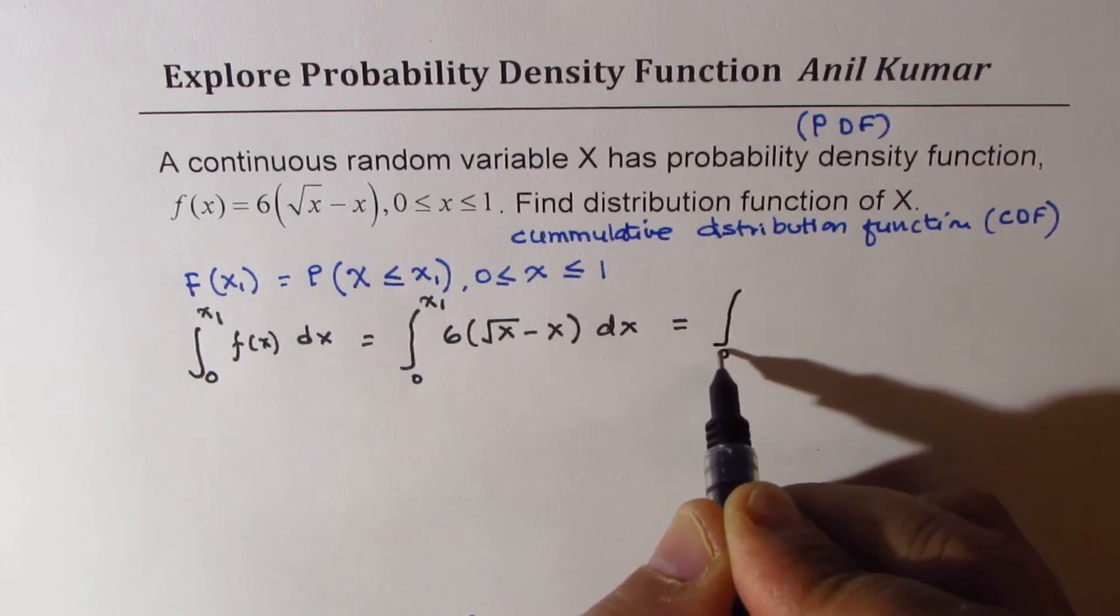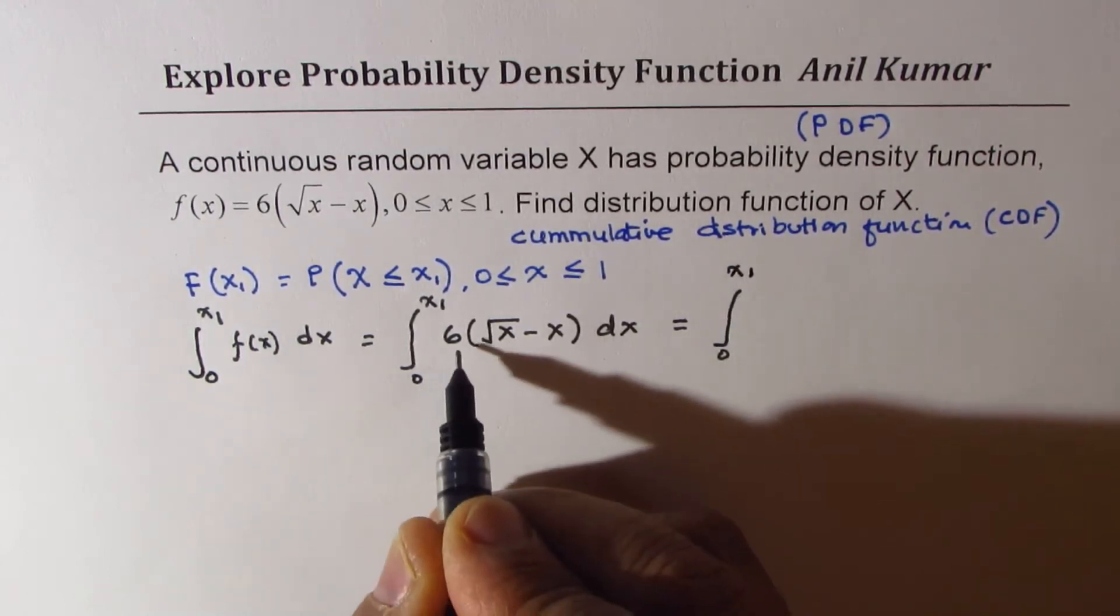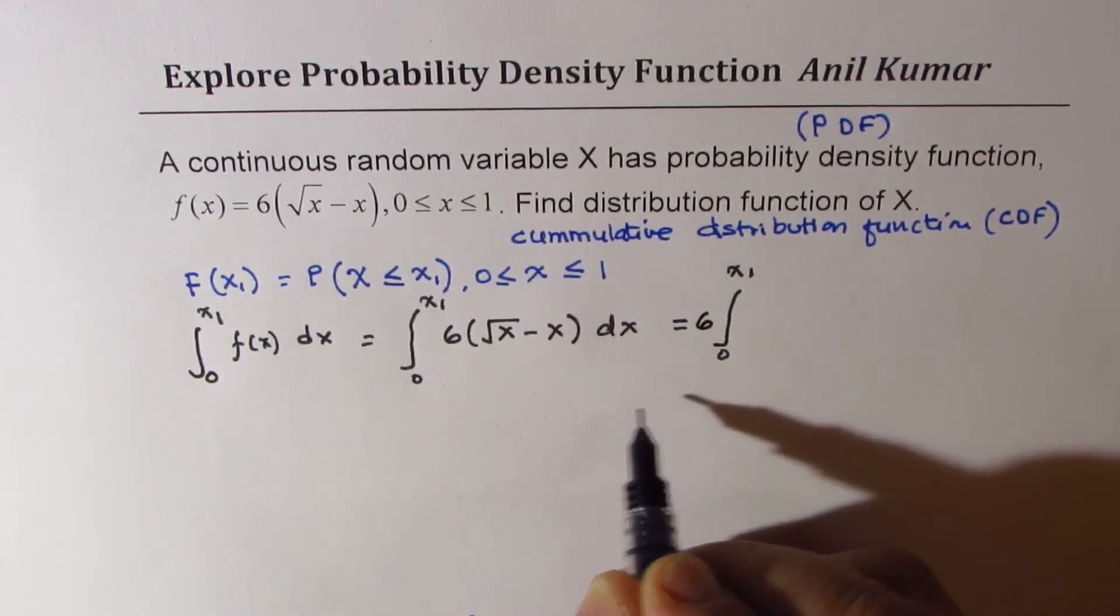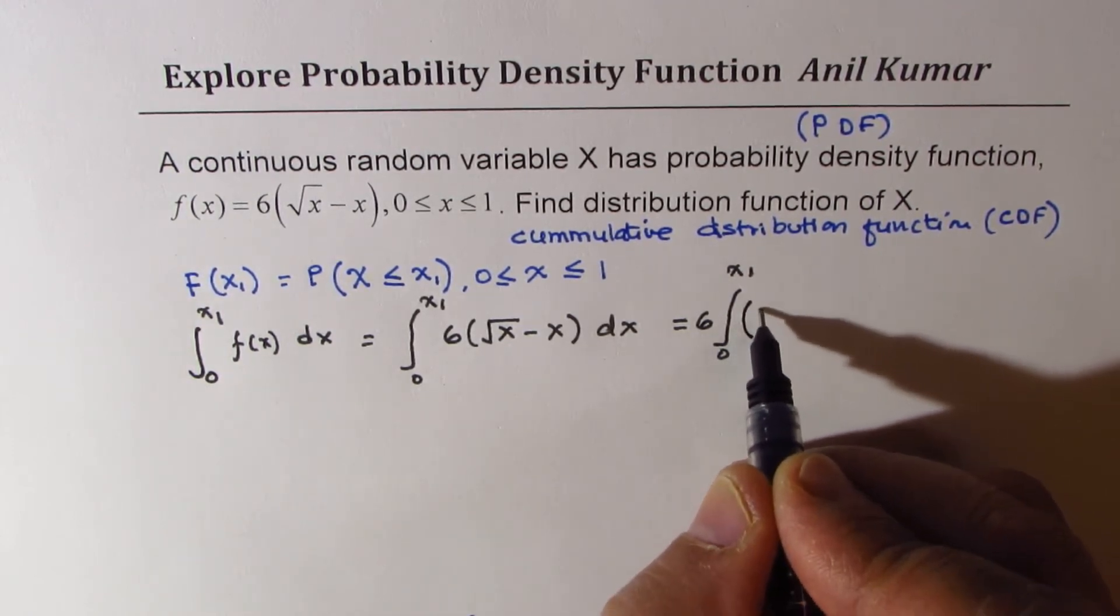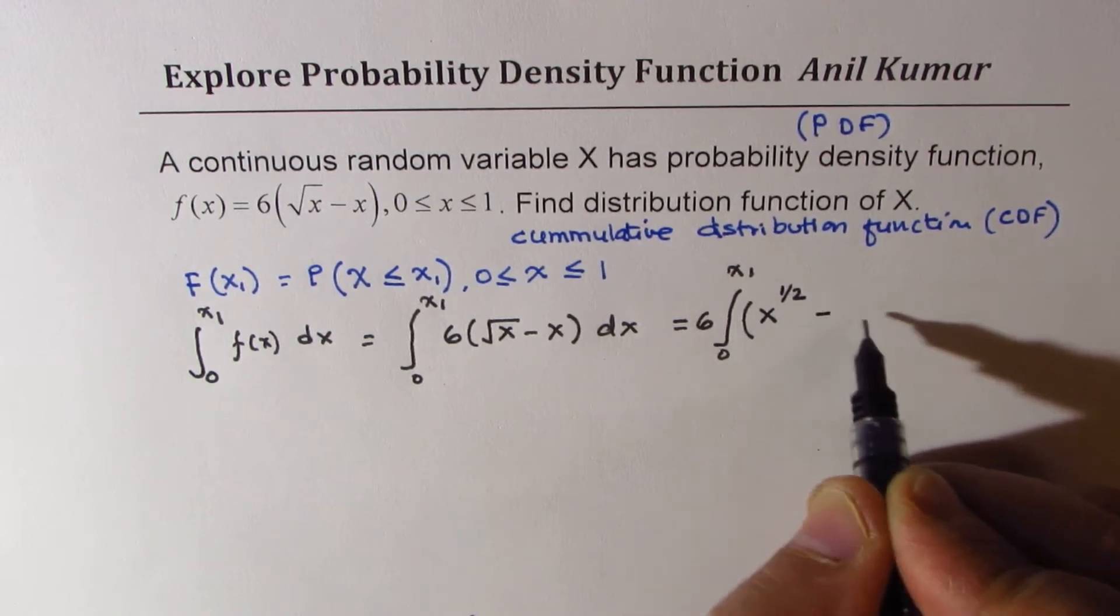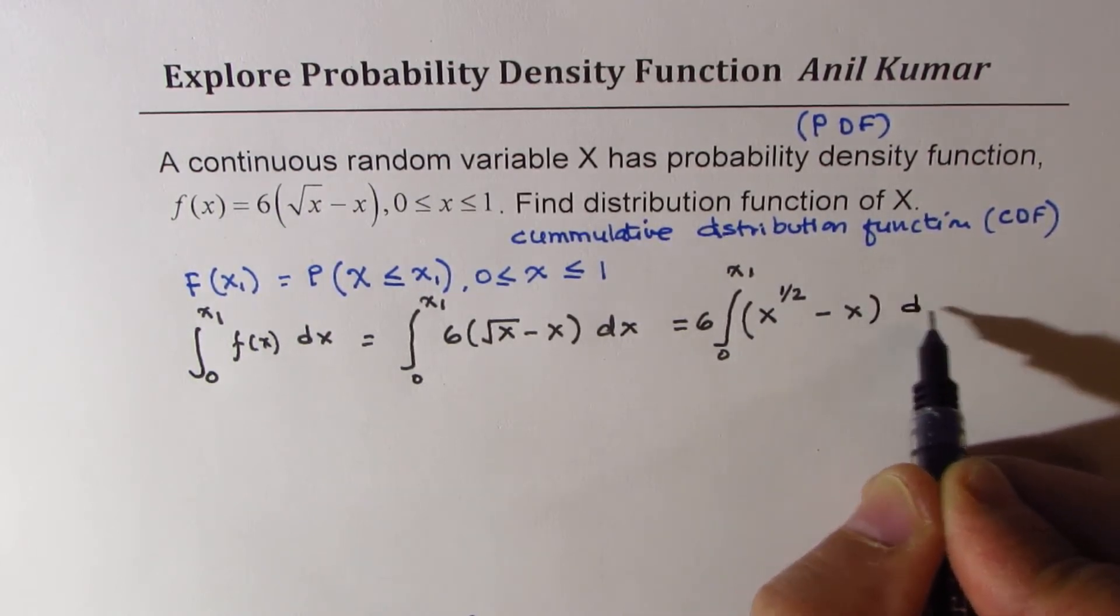This could be written as from 0 to x1. We could take 6, a constant, outside, and we'll rewrite this as x to the power of half minus x dx.